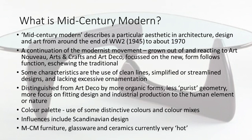It's distinguishable from Art Deco by having more organic forms, less purist geometry, and more focus on fitting design and industrial production to the human or to nature. The colour palette is quite different — they use some very distinctive colours and colour mixes. Their influences include Scandinavian design, and there have been intimations of the mid-century modern style as early as the 1930s, where Scandinavian designers had developed a rounded style of furniture known as soft modernism. And it's quite fashionable and sought after these days — mid-century modern furniture, glassware, and ceramics.